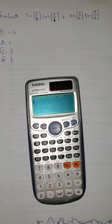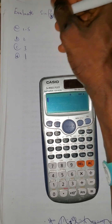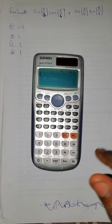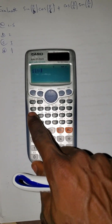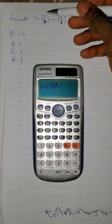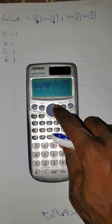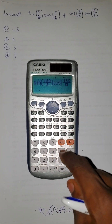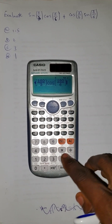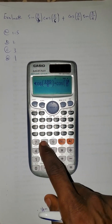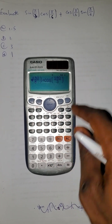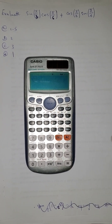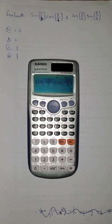There are two methods, but I'll demonstrate both. The first method: replace π with 180°, so you press sin of (180 over 3) close bracket, multiplied by cos. The answer is 1.